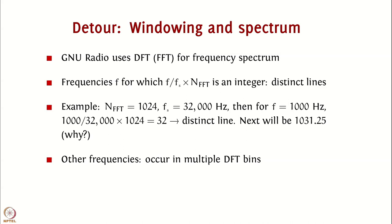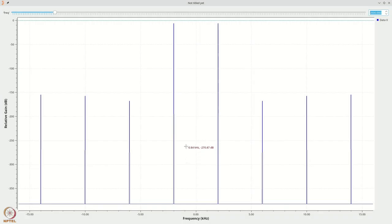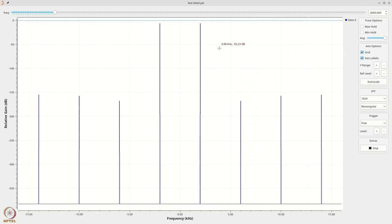But numbers like 1010 or 1016 will not have this property when you choose NFFT to be 1024 and Fs to be 32,000 hertz. Therefore, in such situations, you will get a DFT that has nonzero values in the neighboring bins as well. To get a better idea, let us introduce the control panel by middle clicking and choosing control panel in our frequency plot. We can see that we have 1024 rectangular window. Let us now change this to 2010 hertz. You will see now that the spectrum becomes slightly fat.